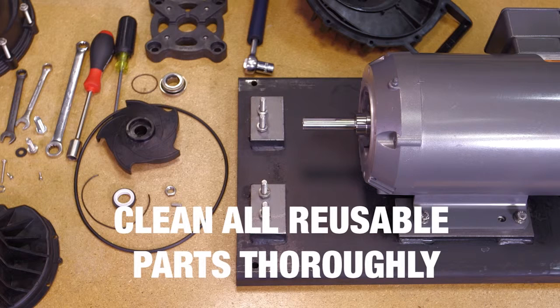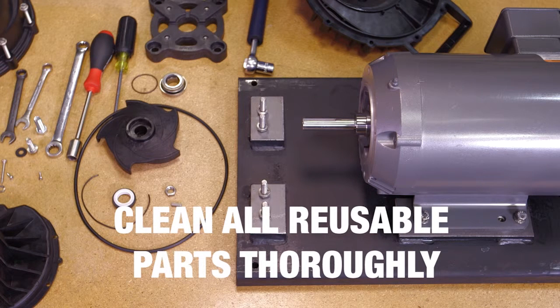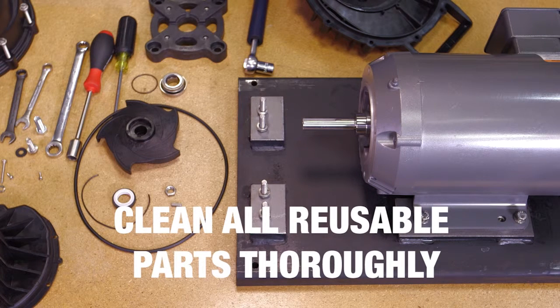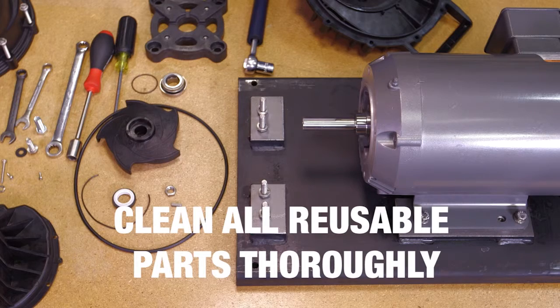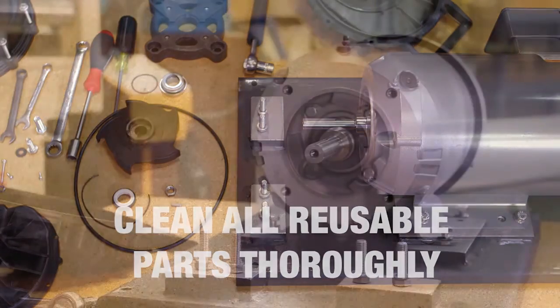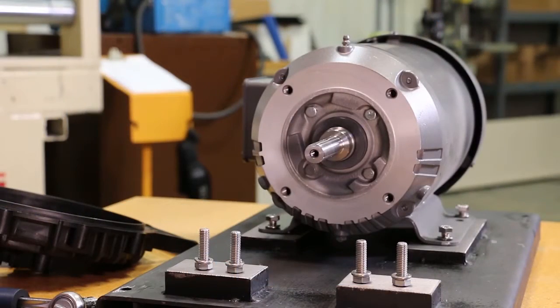With the pump completely disassembled, clean all of the reusable parts thoroughly. Remove any traces of old gasket material and trapped or dried liquids that were run through the pump. At this time, it may be necessary to polish the drive unit shaft to remove any corrosion that may have formed.